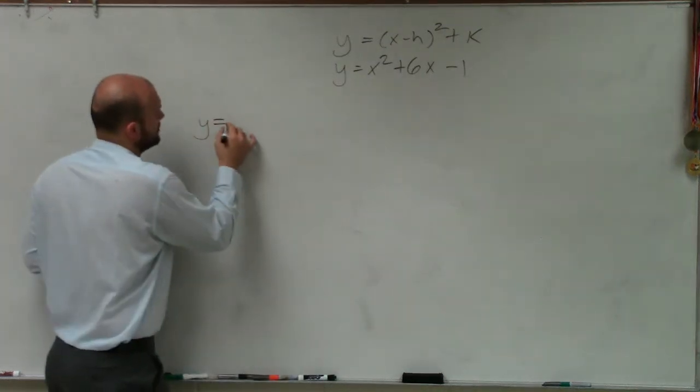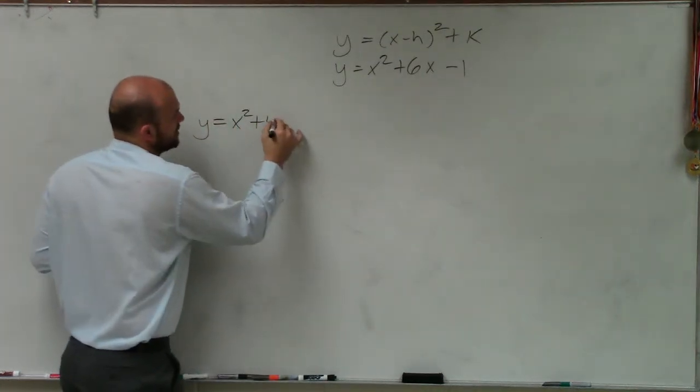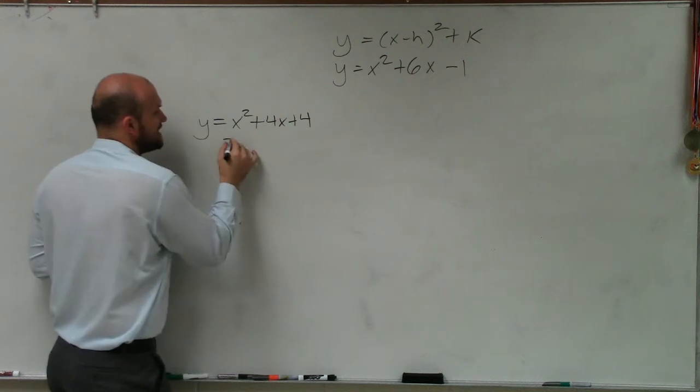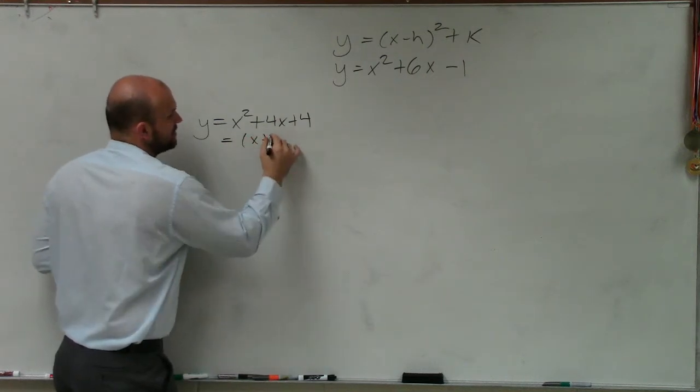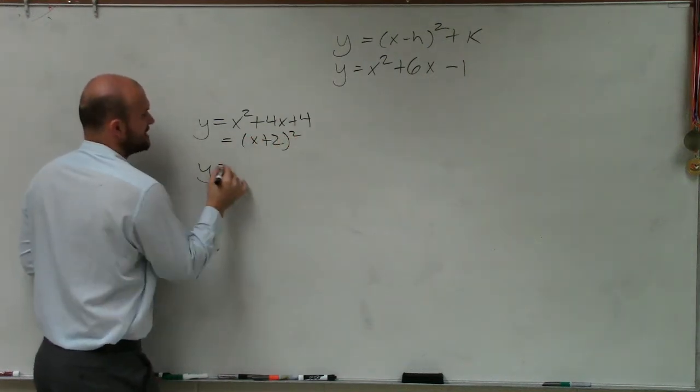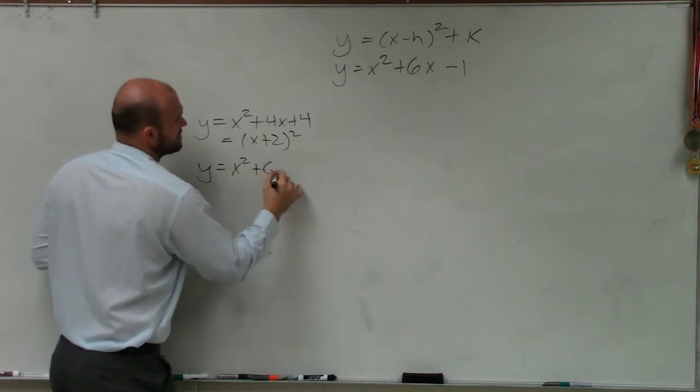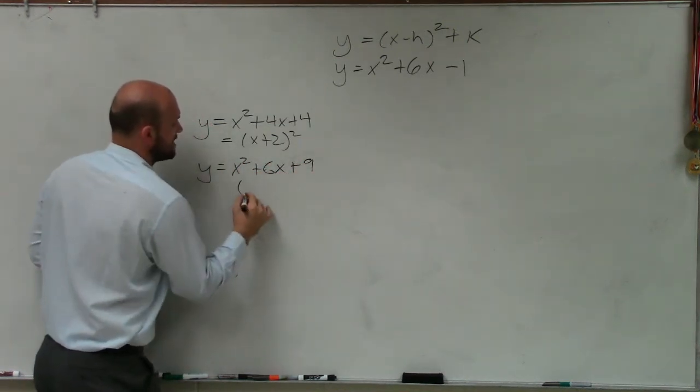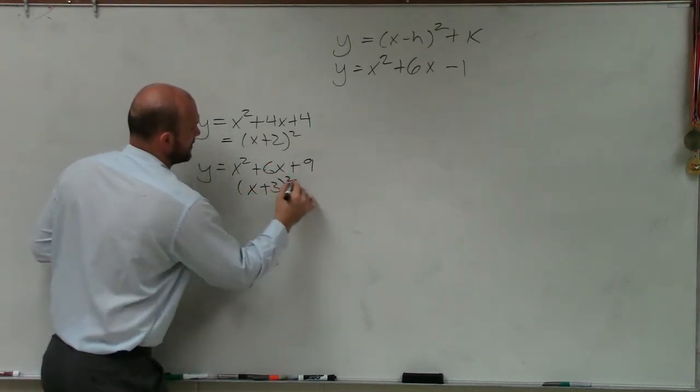So an example of a perfect square trinomial would be y = x² + 4x + 4, because that factors down to (x + 2)². Another example is x² + 6x + 9, because that factors down to (x + 3)².